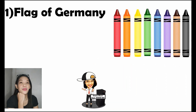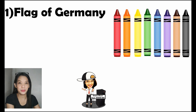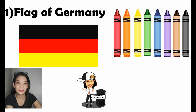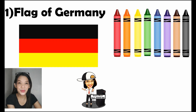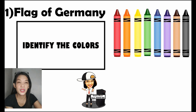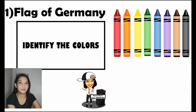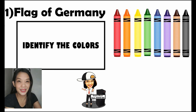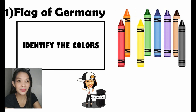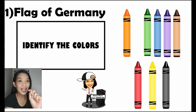For number one, we have the flag of Germany. Identify the colors of that flag. That's correct! We have red, yellow, and black.